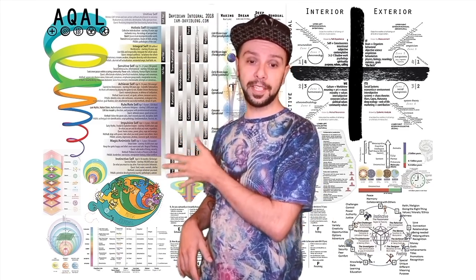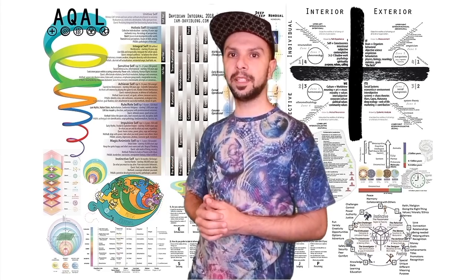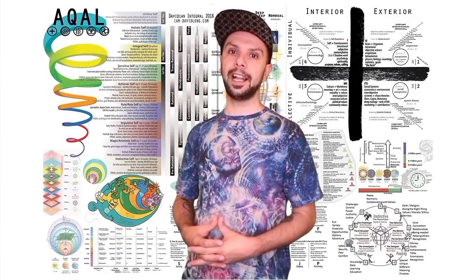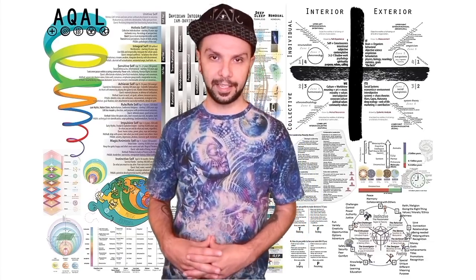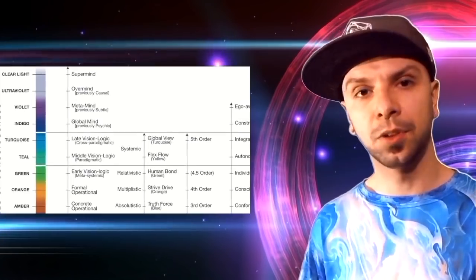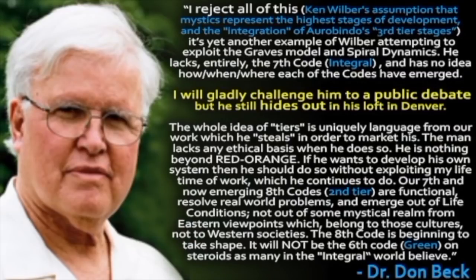Let's talk levels. Notice there's no third tier really on my map. I'm open to debate about what the third tier could possibly be or if there's something like that. I think a lot of that stuff is yet to be seen. On the previous maps, you see Aurobindo's state stages stacked on top with these mystical ideas about what a third tier would look like. And I don't think it has anything to do with Aurobindo's state stages and any of that kind of stuff. And neither does Don Beck, by the way. I asked Don Beck what he thought about Aurobindo's Eastern spiritual mystical ideas as representing some kind of possible third tier of awakening. And he basically said that it's a bunch of crap. Ken Wilber's assumption that mystics represent the highest stages of development and the integration of Aurobindo's third tier stages is yet another example of Wilber's attempt to exploit the Graves model and spiral dynamics. The whole idea of tiers is uniquely language from our work, which he steals in order to market his.